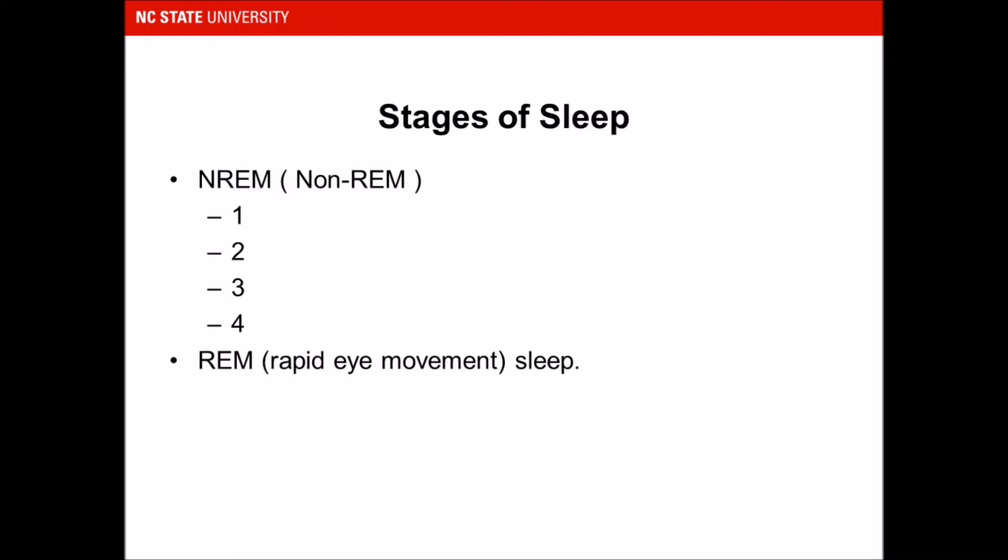After deep sleep completes we go to a rapid eye movement stage, where our brain activity is almost like when we are awake, but we are still asleep. The brain activity is very high and our eyes move rapidly, which is why it is termed the rapid eye movement stage. This cycle continues at least 4 to 5 times during sleep, and each cycle has a duration of about 90 to 100 minutes, as we will see on the next slide.